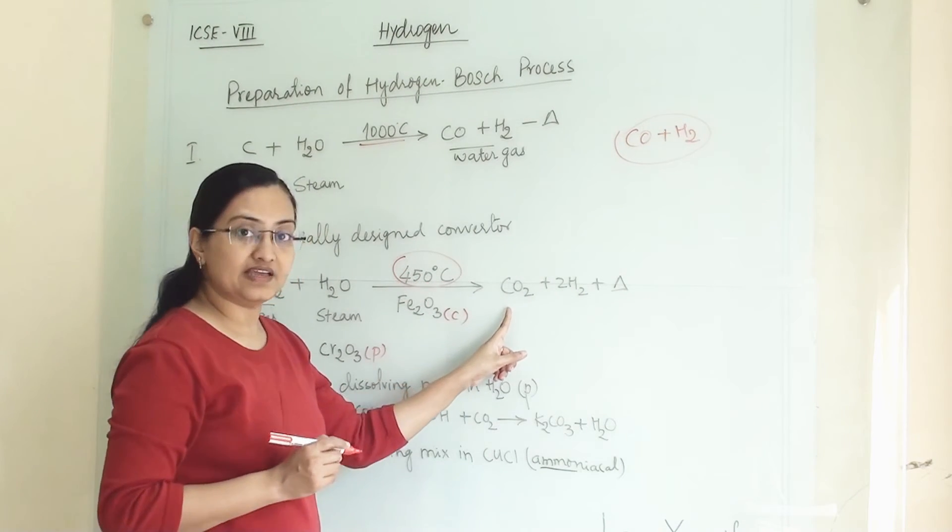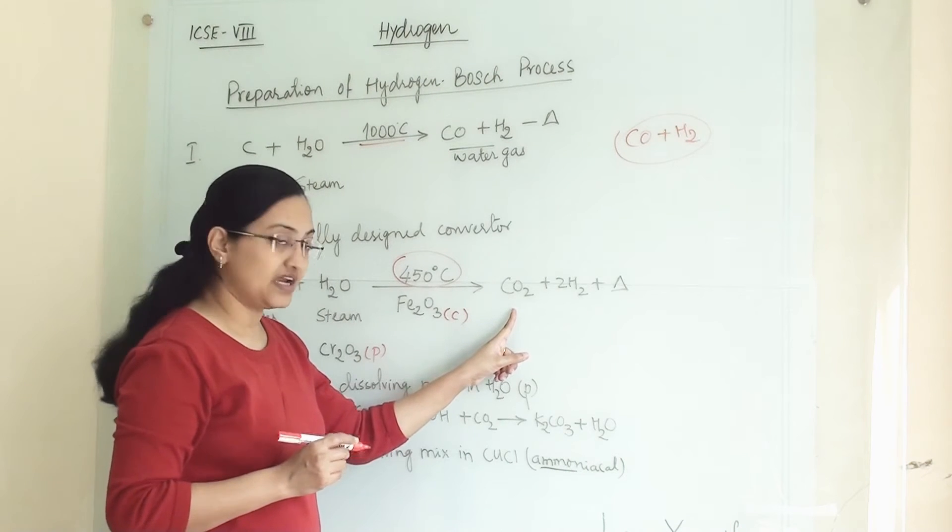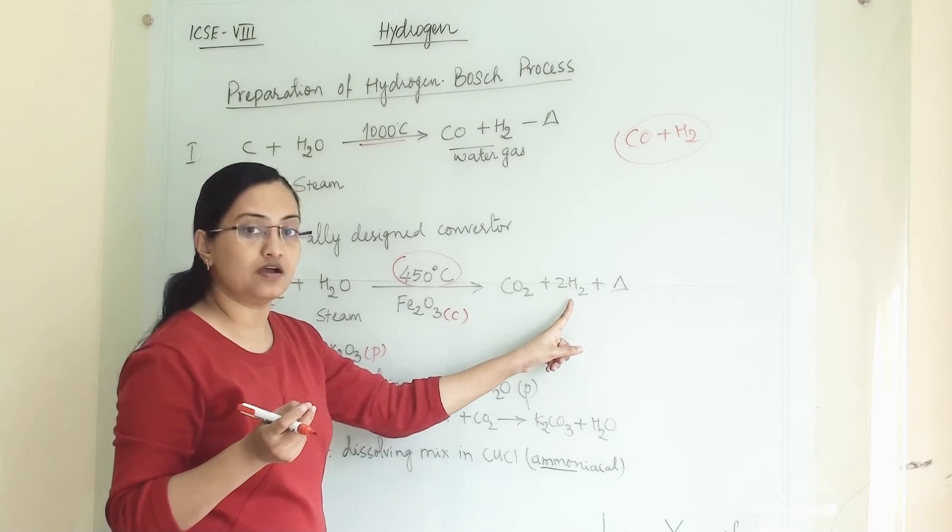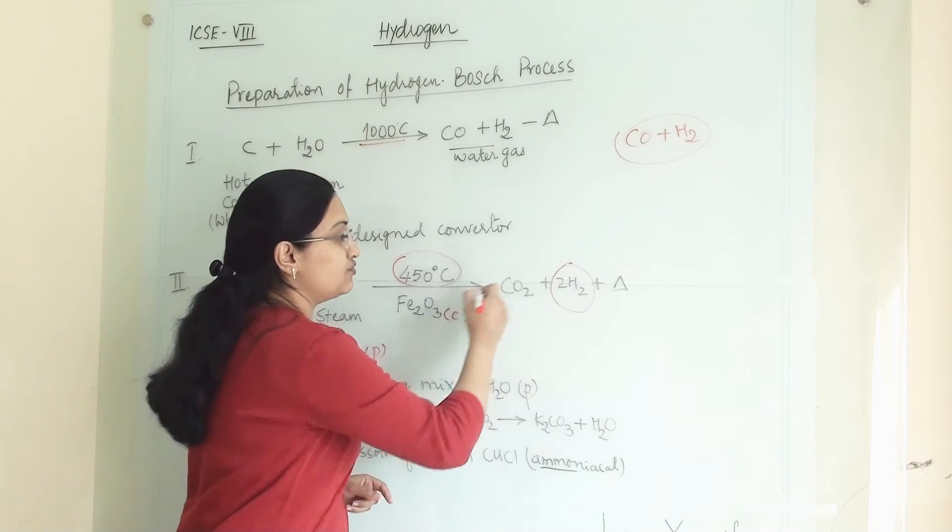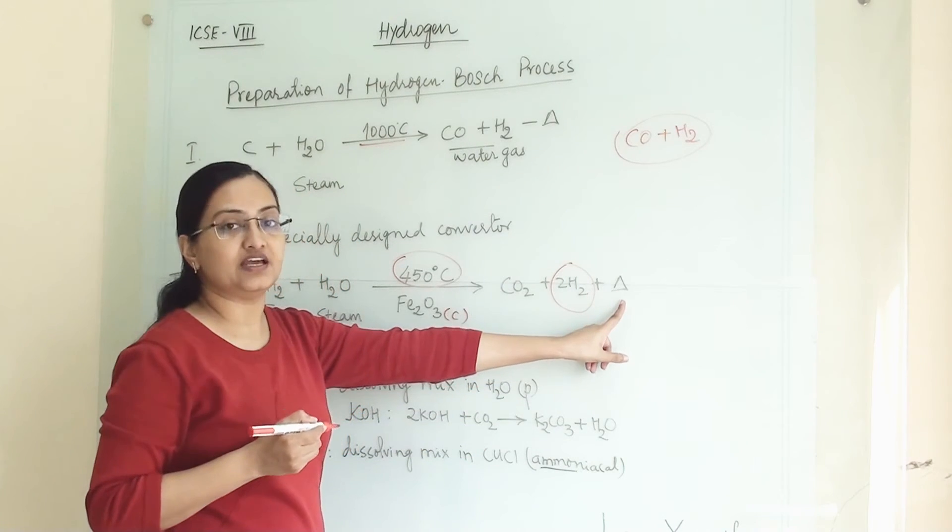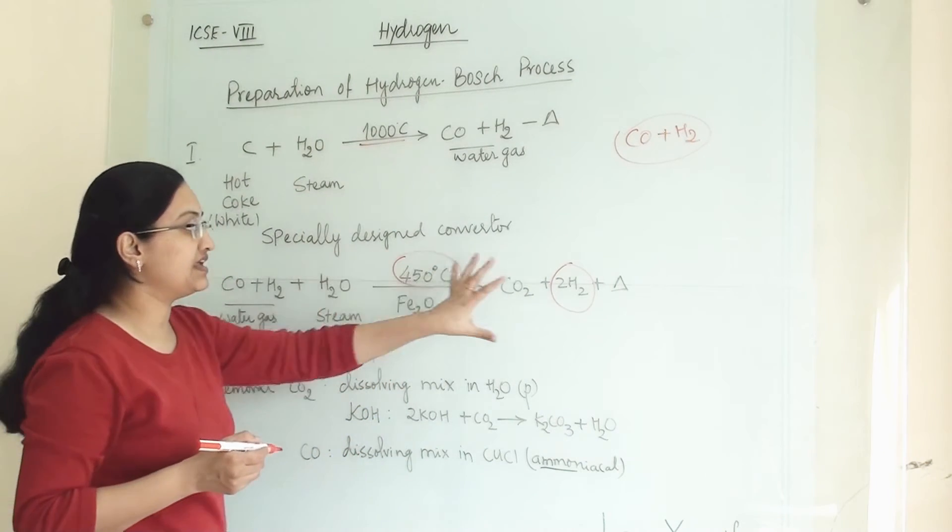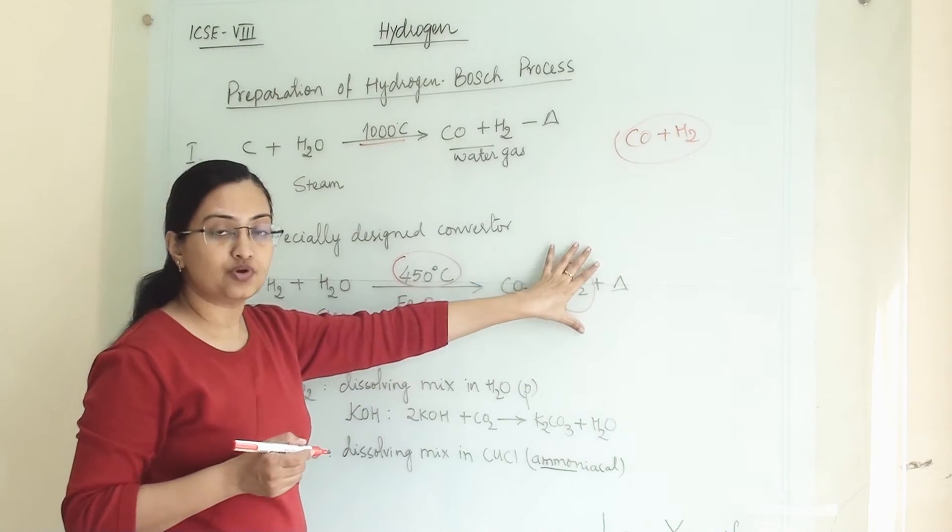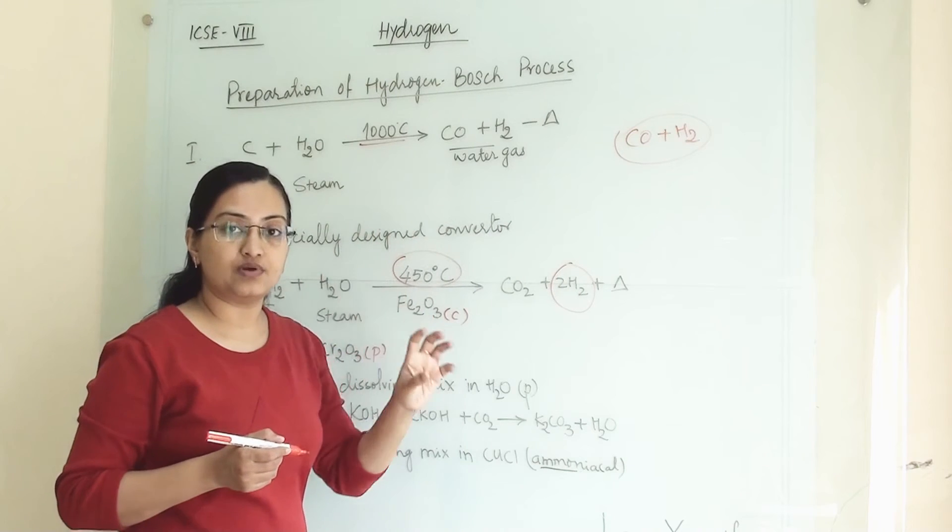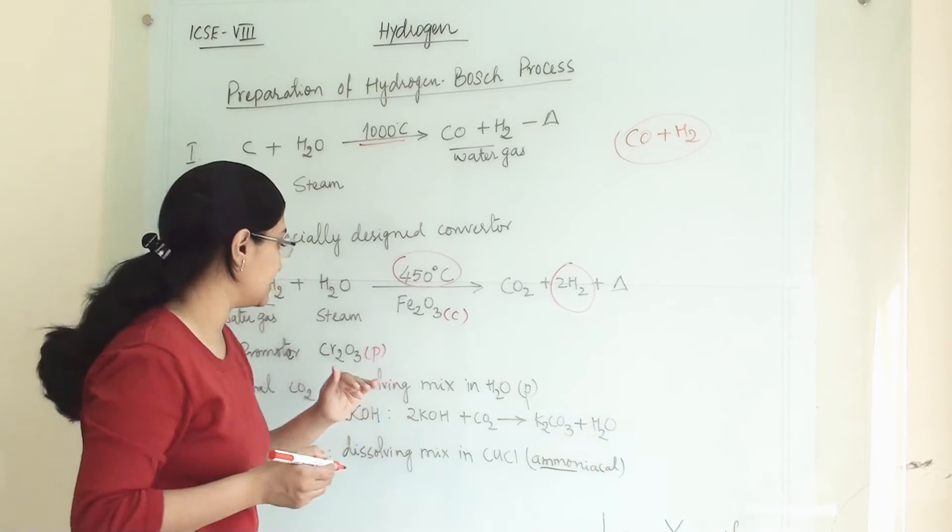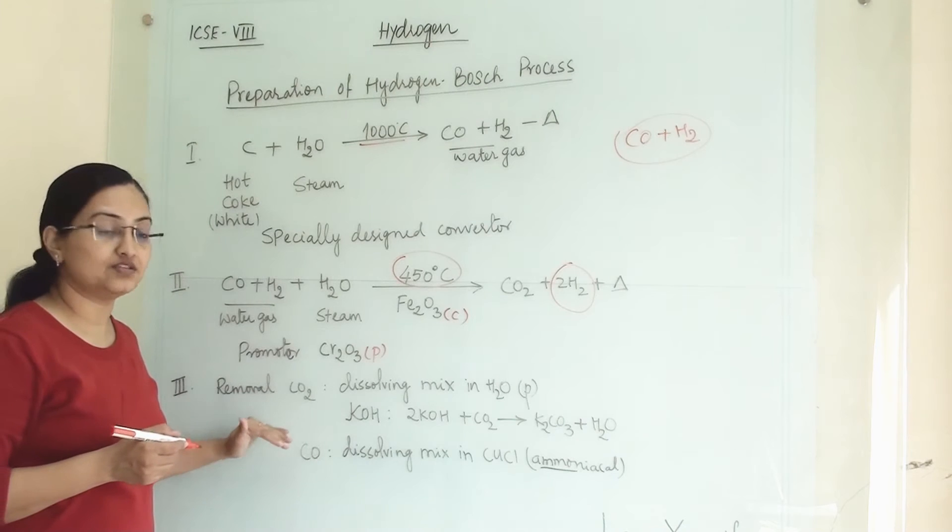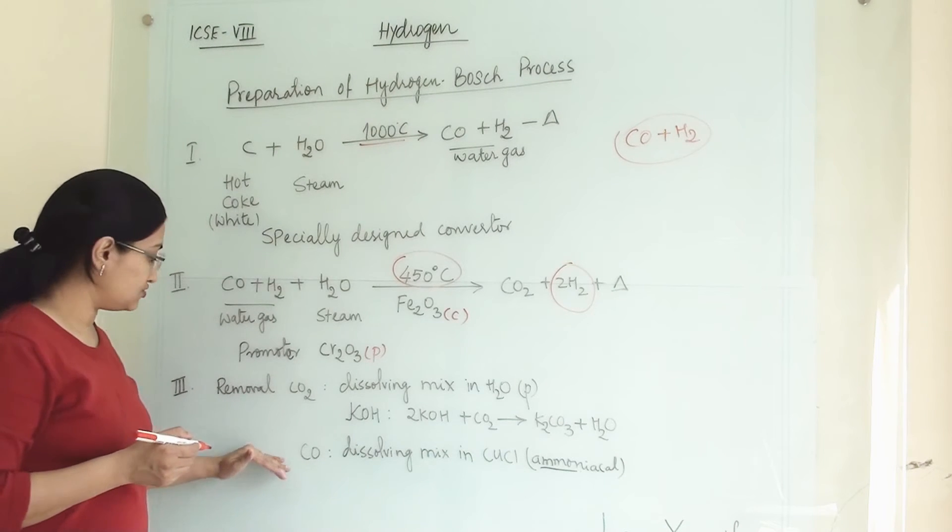We will get here carbon dioxide, some traces of carbon monoxide, and our product that is hydrogen gas, and a lot of heat energy will be released. So in second step we will get our product, but this product is along with carbon dioxide and carbon monoxide. So in third step we will eliminate these two.